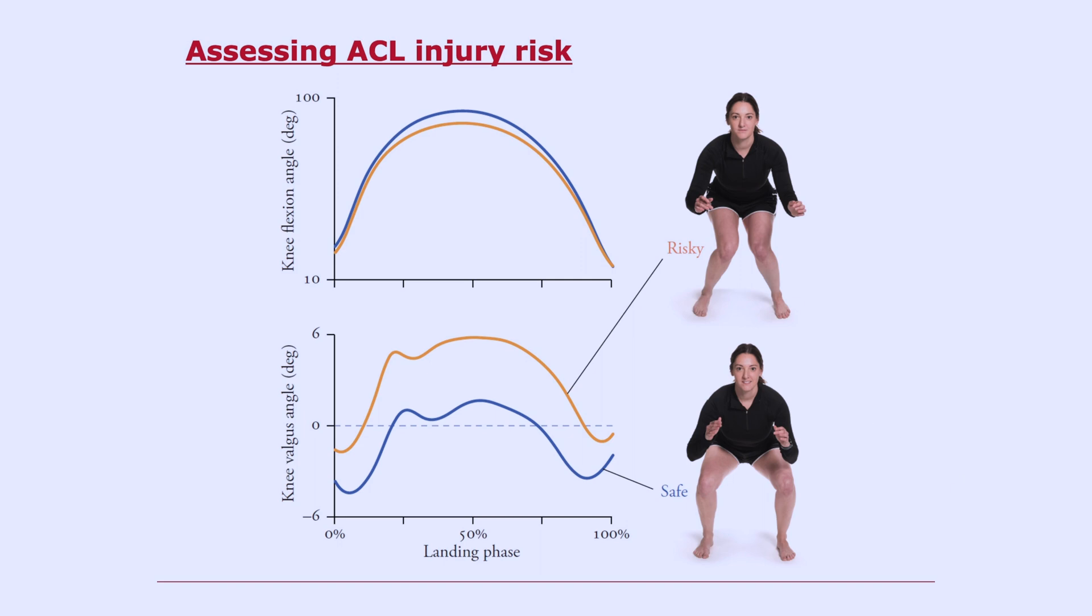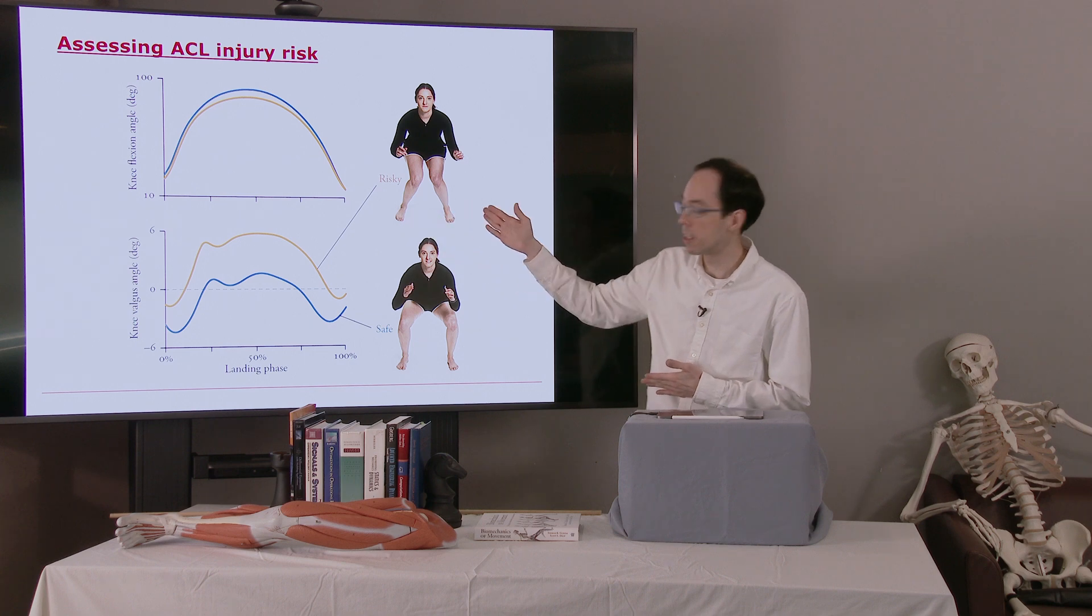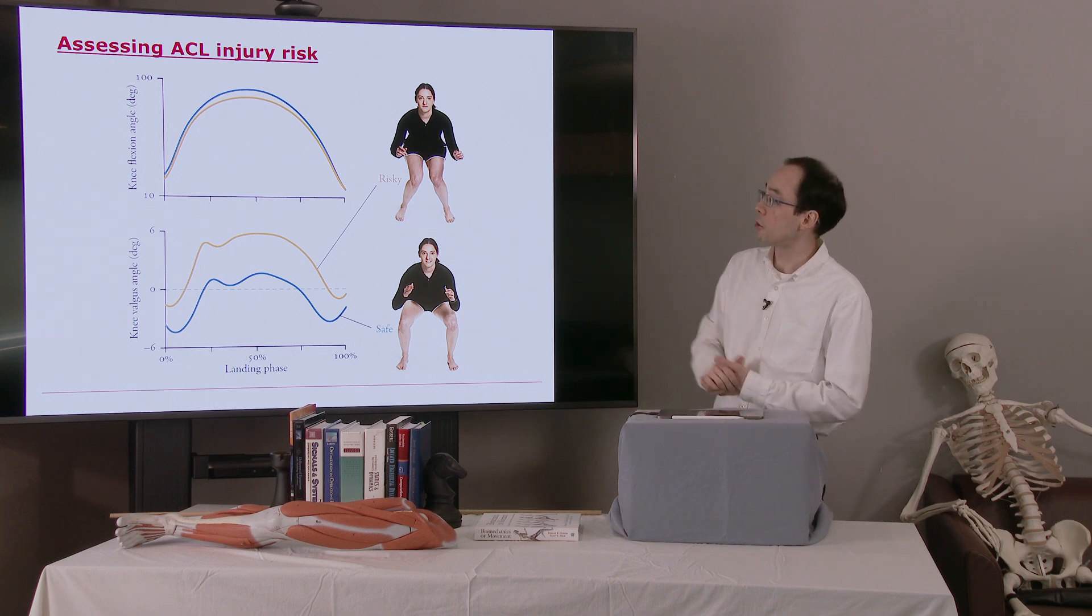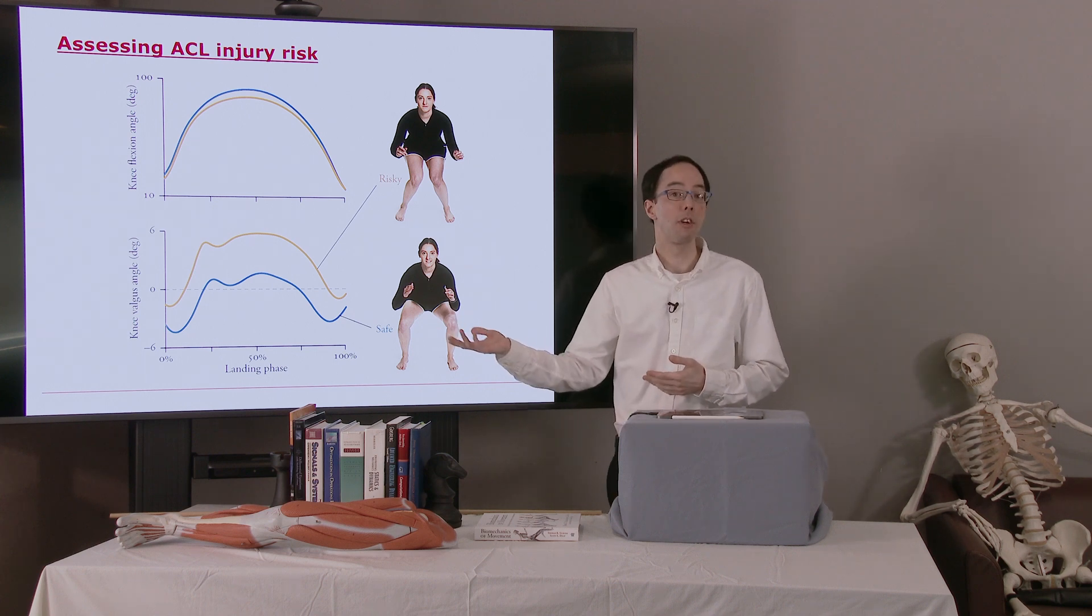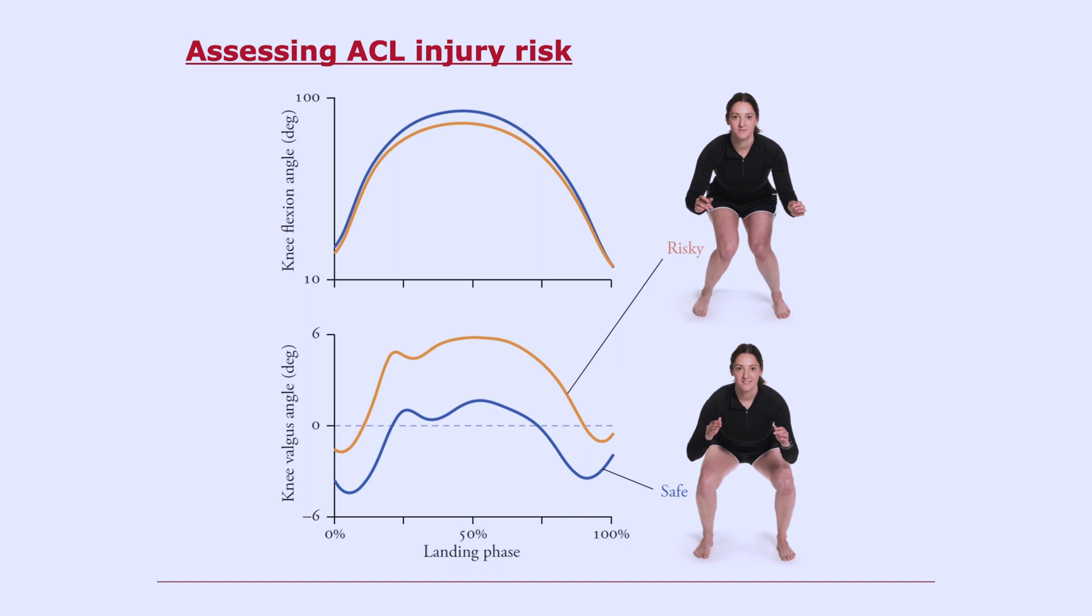The plots on the left, the top plot shows a knee flexion angle in degrees over the landing phase, and you'll notice that the two strategies look roughly the same in terms of knee flexion angle. The knee valgus angles are quite different though, and the knee valgus angle has a big impact on the stresses on the ACL. And you can actually train athletes to land in a particular way, thereby reducing injury risk of the ACL.